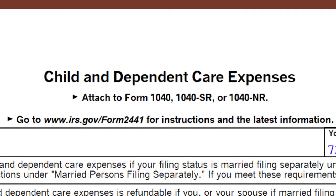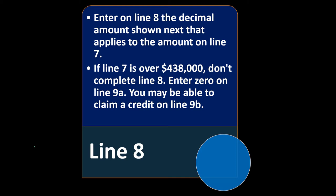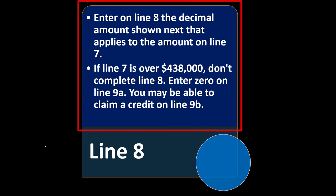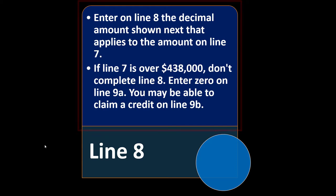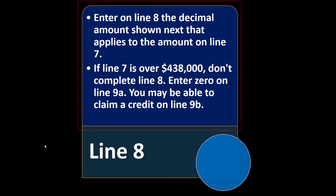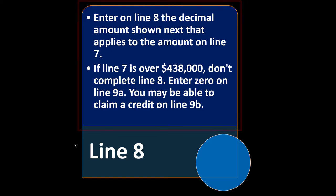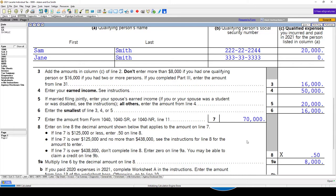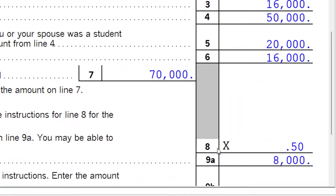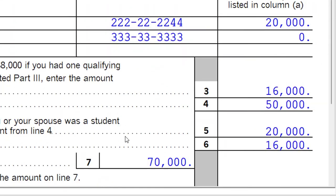We're looking at line 8 this time. Enter on line 8 the decimal amount shown that applies to the amount on line 7. If line 7 is over $438,000, don't complete line 8 — enter zero on line 9A. You may be able to claim a credit on line 9B. Looking at our statement, we're going down here basically to line 8.